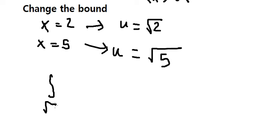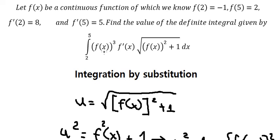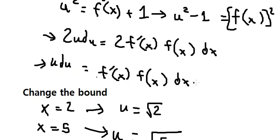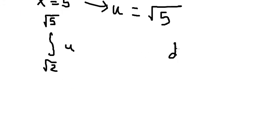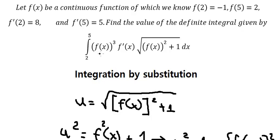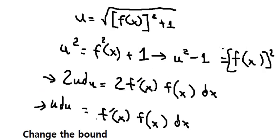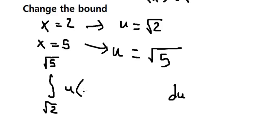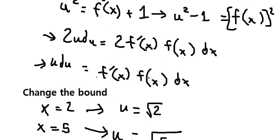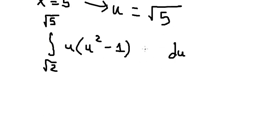So the lower bound 2 is replaced by the square root of 2, and the upper bound 5 is replaced by the square root of 5. The term f(x) f'(x) dx is replaced by u du. The factor f(x)² is replaced by u² minus 1, and the square root term is replaced by u.